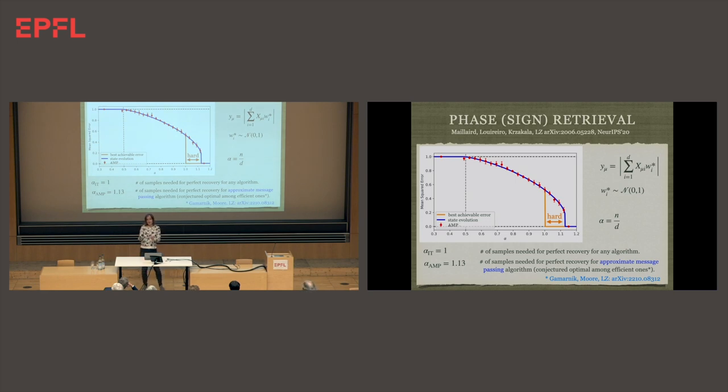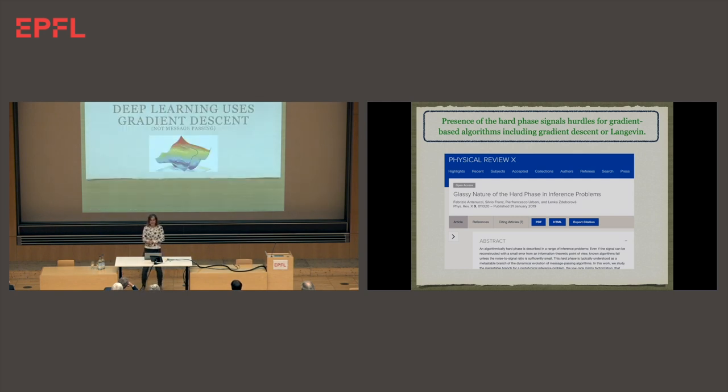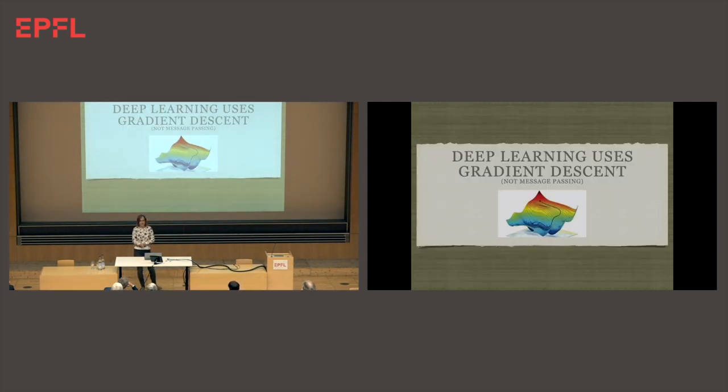But I want to make a slightly different point, which is some really curious aspect of the existence of this hard phase and the consequence it has in machine learning. Here, all it is saying is that I need something like 13% more samples to be able to do something algorithmically rather than information theoretically. This doesn't seem like much. But if the hard phase is there, and this goes to a line of work we put up a few years back, if the hard phase is there, then its presence actually has far-reaching consequences for the behavior of gradient descent-based algorithms. And guess what? In machine learning, we always use gradient descent.